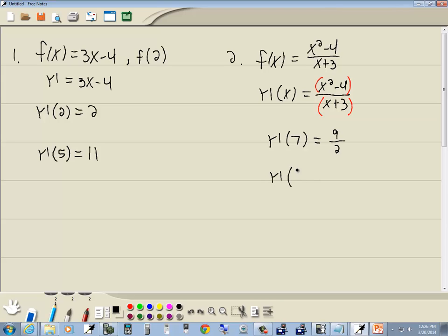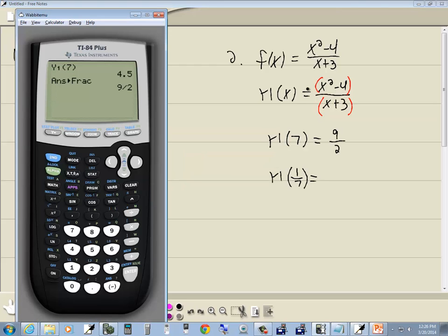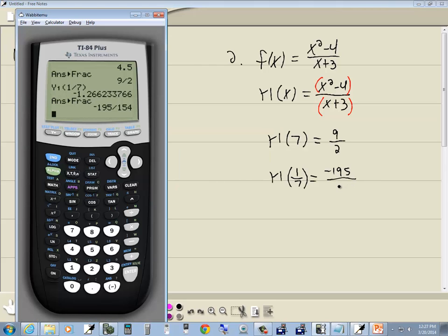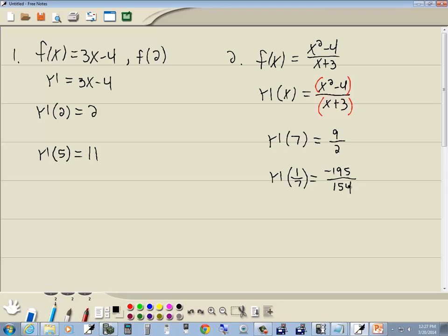Now if I want to do a different value, let's say I want to put 1 7th in there. Well, to do that, we go to our vars, go to y vars, go to function, choose y1. And we'll do a beginning parentheses, 1 divided by 7, closing parentheses, and then enter. And we get a decimal. We know how to handle that. We do math, enter, enter. That's interesting. I just made that number up, but that came up with a nasty fraction. Negative 195 over 154. And it's already simplified.